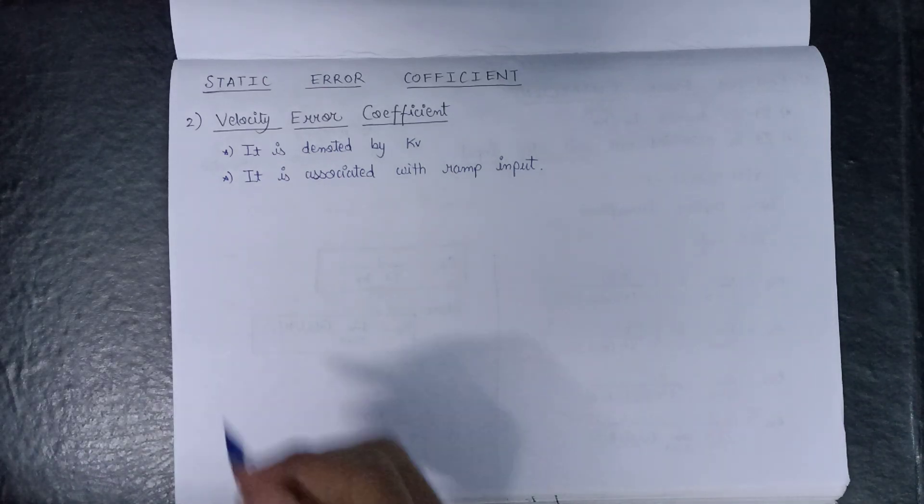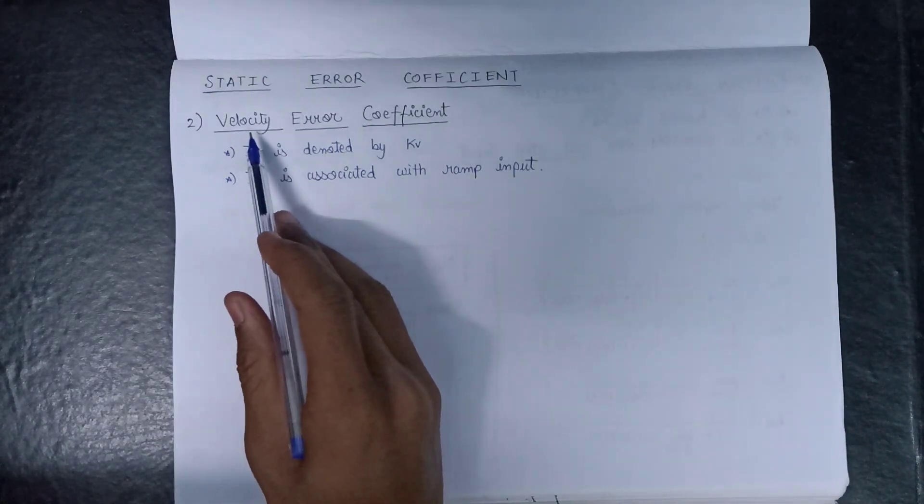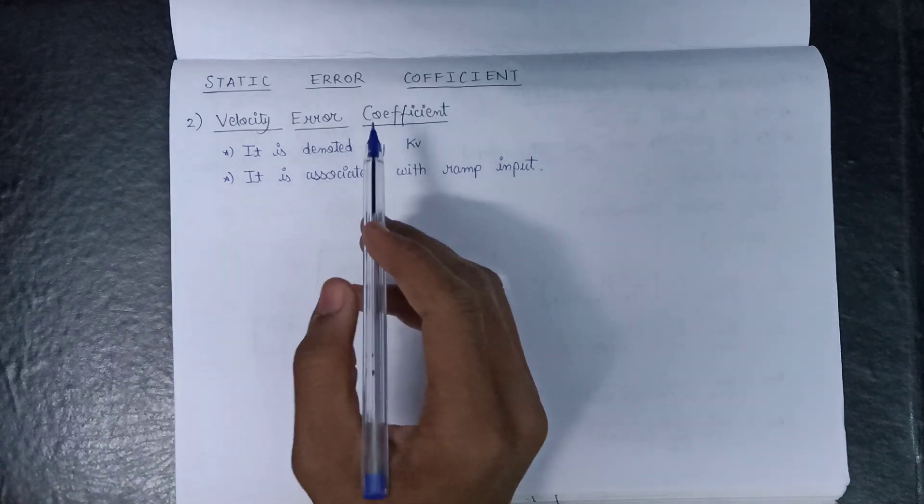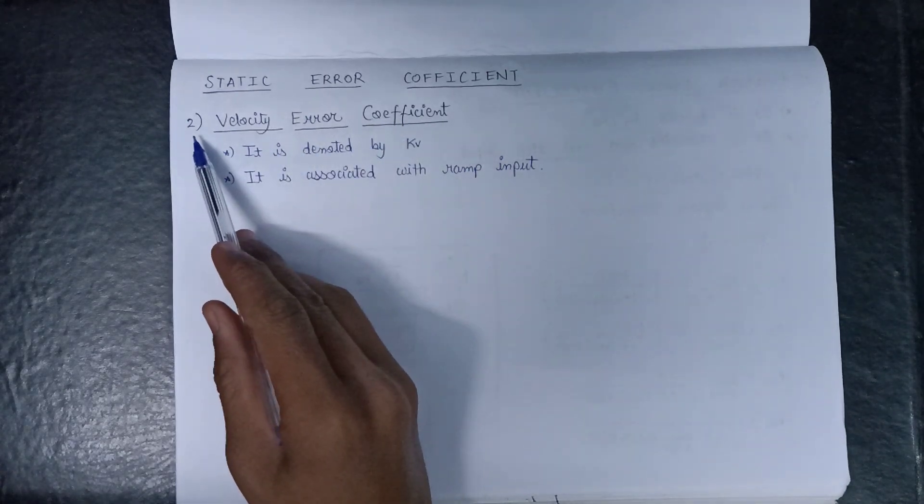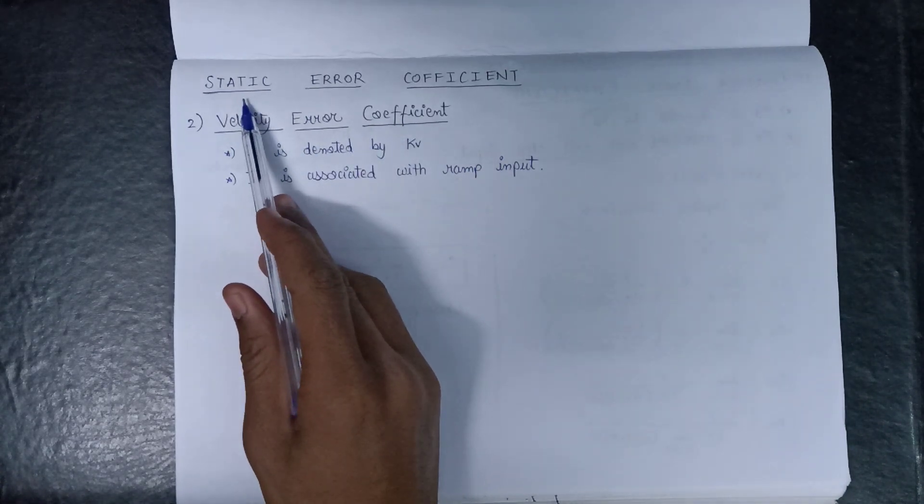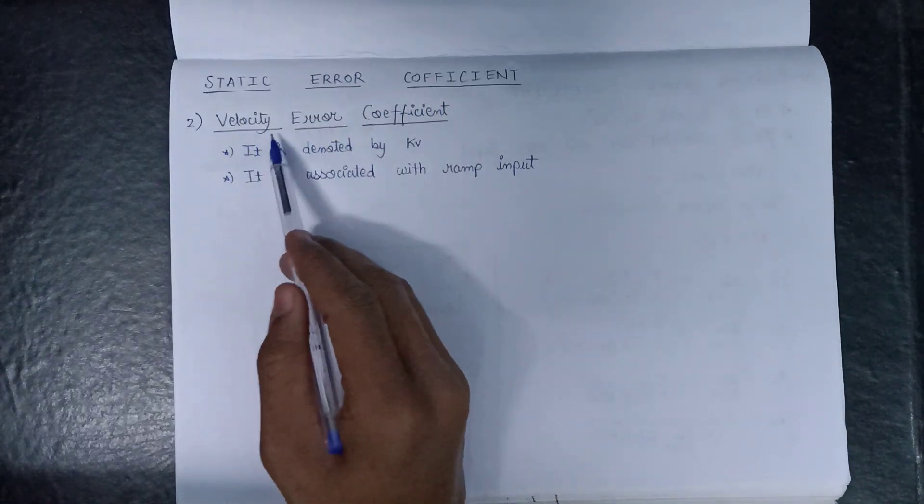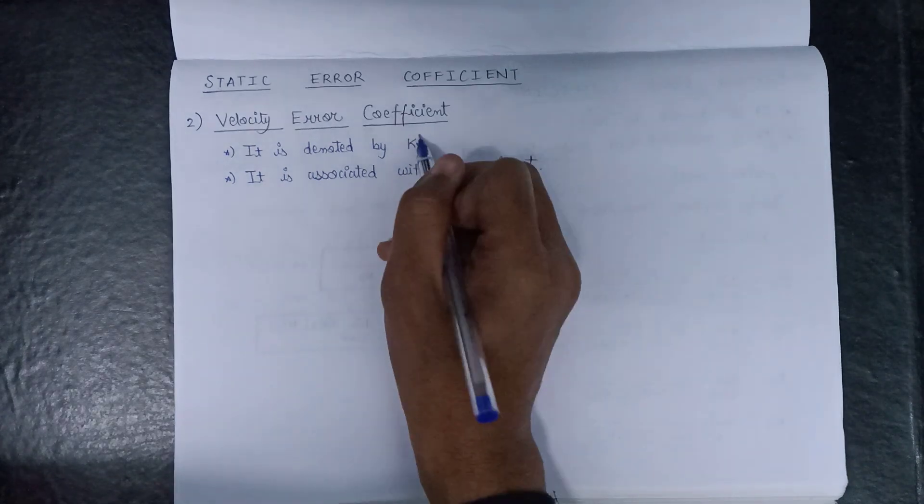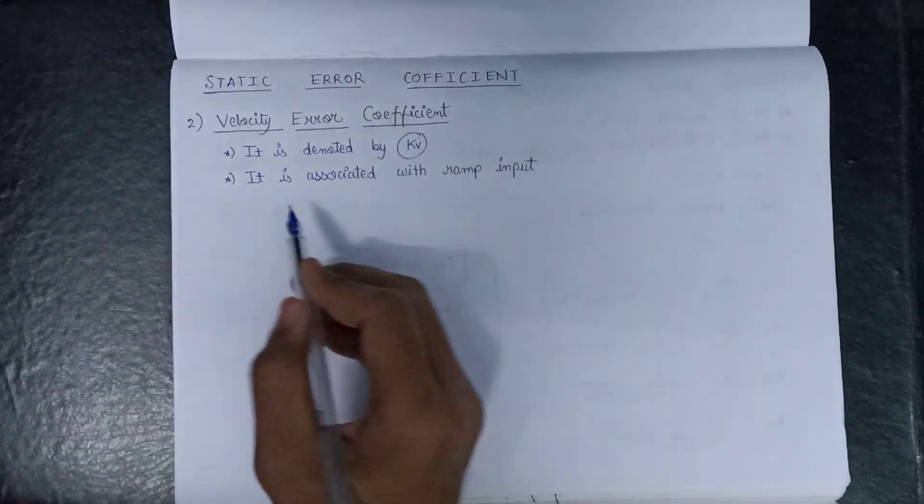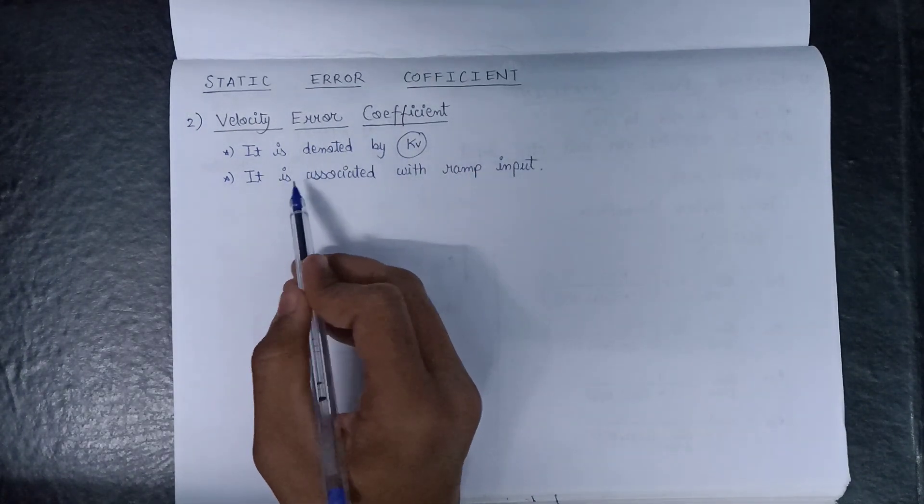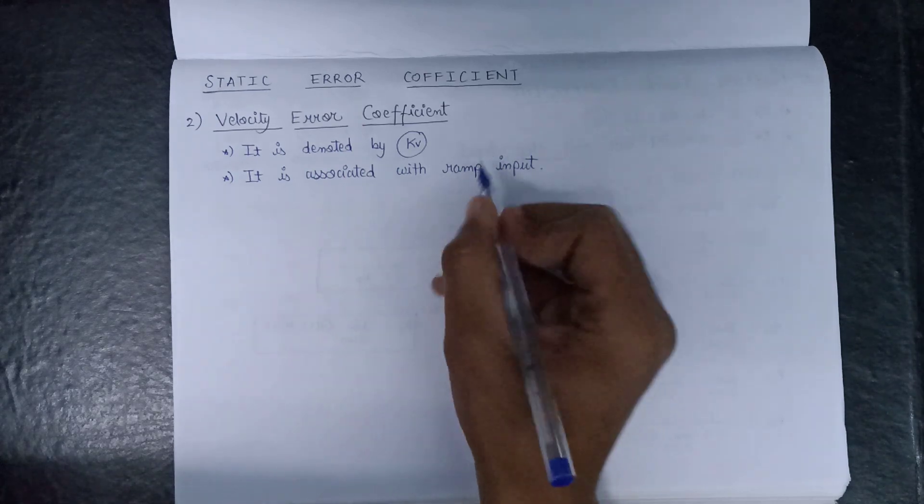Welcome all. In this lecture we are going to study about velocity error coefficient. It is the second error coefficient which comes under the static error coefficient category. Velocity error coefficient is denoted by the symbol Kv. In velocity error coefficient, it is associated with ramp input.